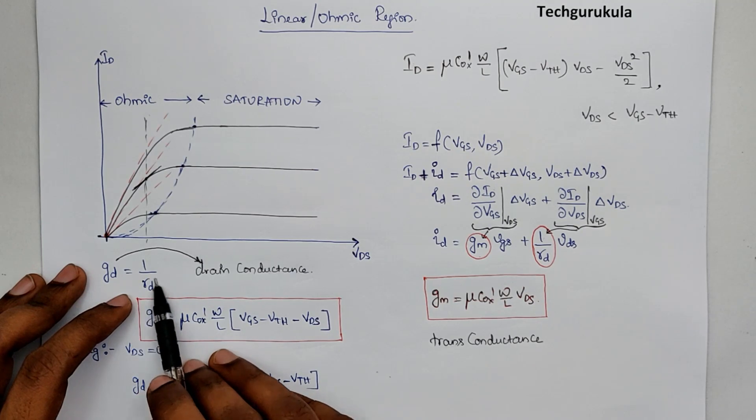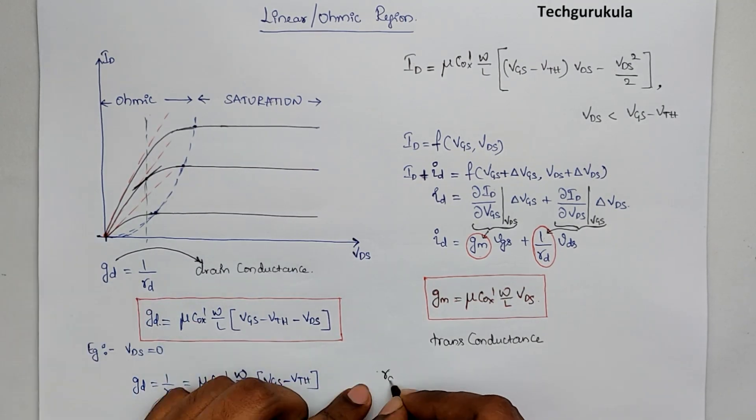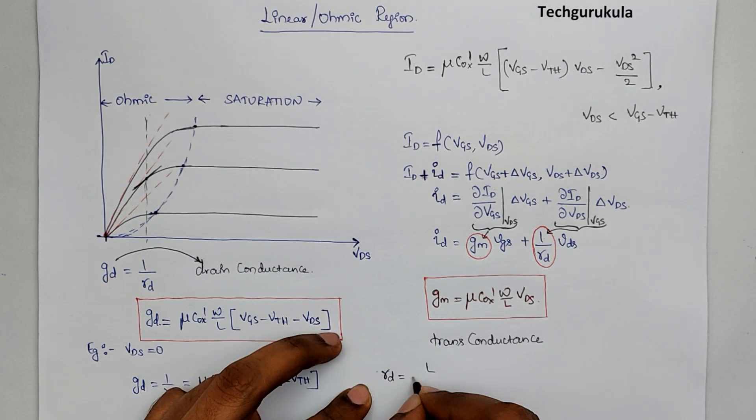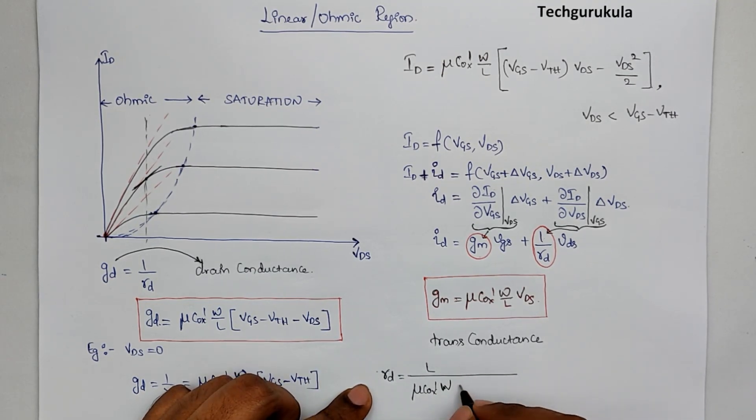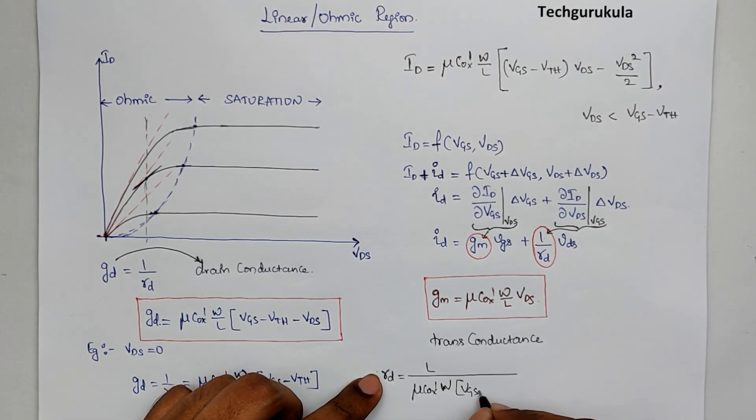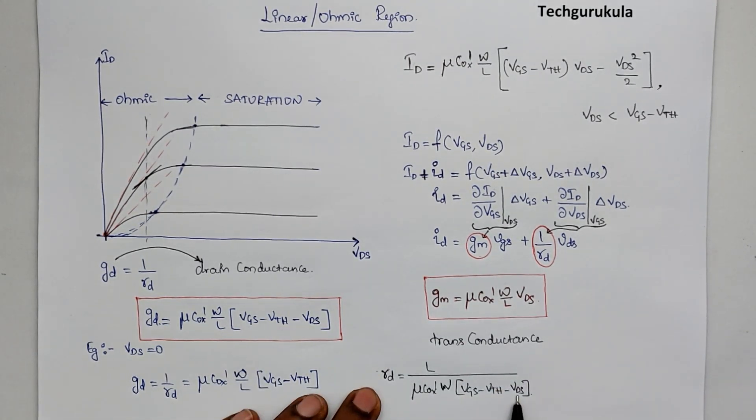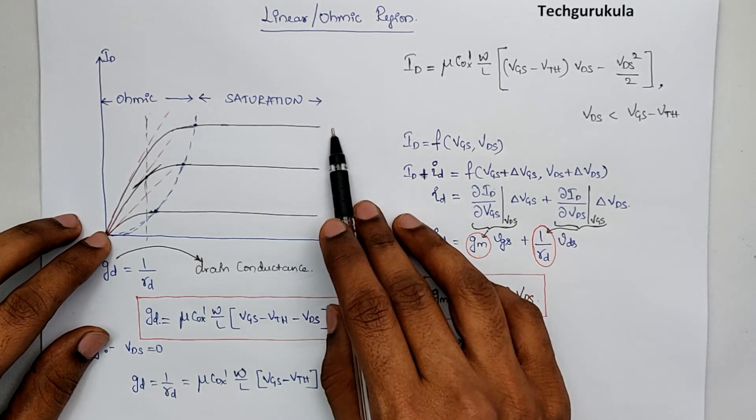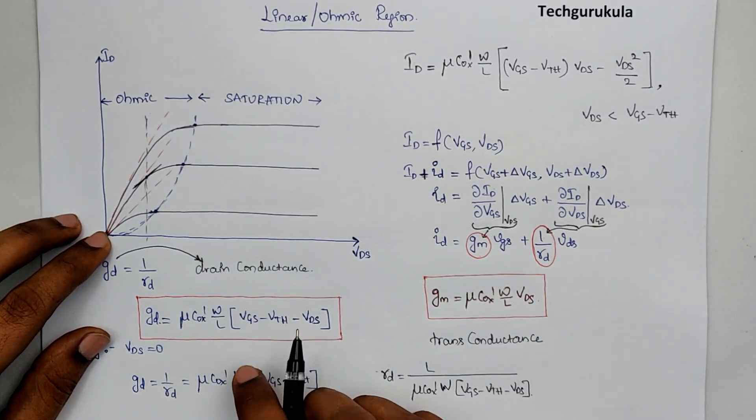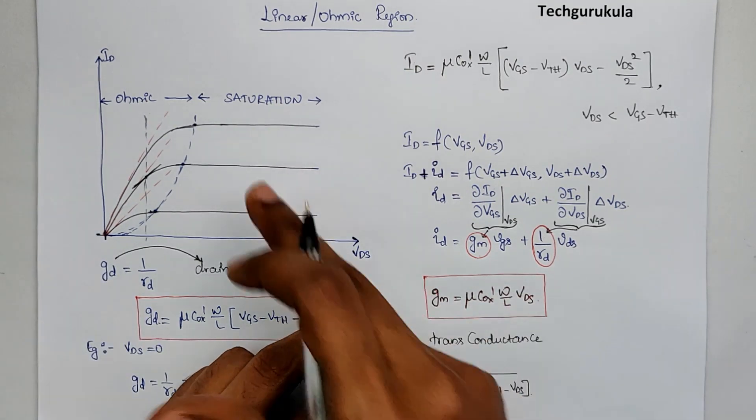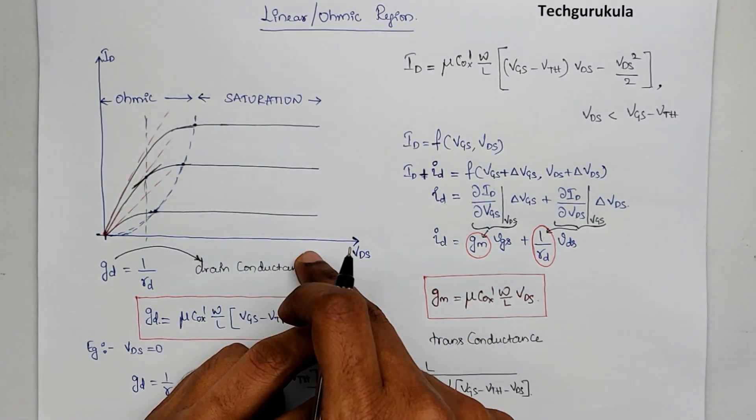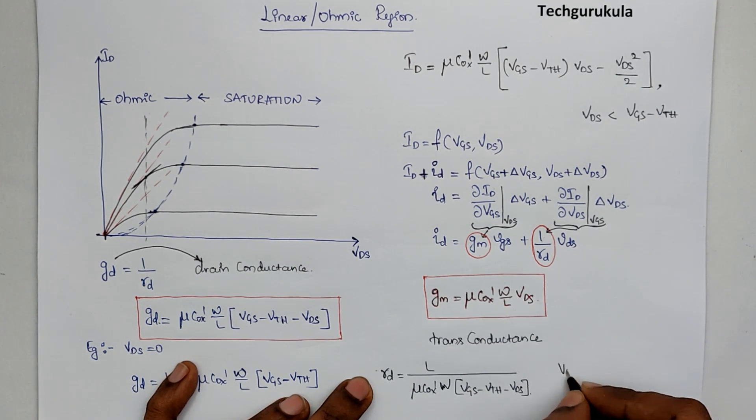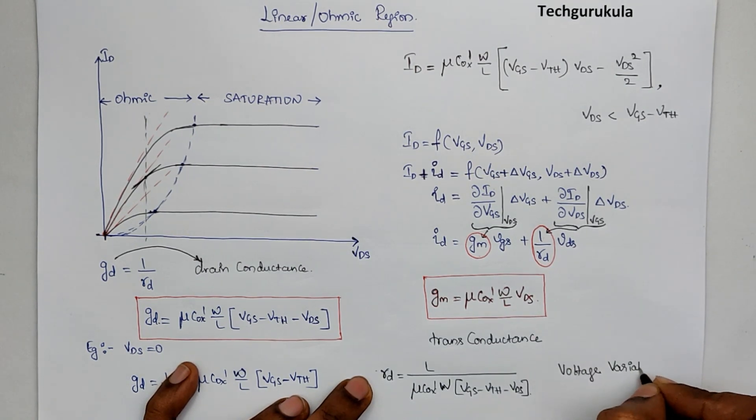This is small signal drain resistance, which is given by RD is equal to L over mu C ox prime W times VGS minus VTH minus VDS. Assuming we are operating at a very small VDS, we can say that the resistance would be changing with respect to VGS. Which means by controlling the gate potential, the resistance between the drain and source can be controlled. This is a voltage variable resistor.